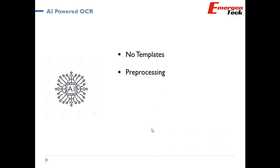Number two is pre-processing. To ensure accuracy of data extraction, AI-powered OCR handles documents in multiple ways: it ensures that alignment is correct, it tilts the document to make sure it comes into the right form, and it ensures that the edges of the documents are properly smoothed so that characters and words are properly captured.